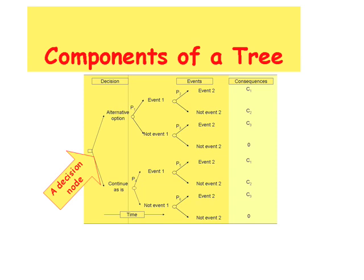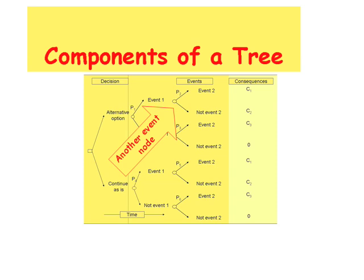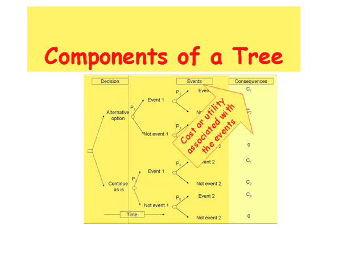This slide shows the components of a decision tree. You see here a decision node — a square node with two arcs going out of it to alternative options. One is 'continue as is' and the other is the alternative option. The event node is shown with a circle and each arc points to either the event occurring or not occurring. Here you see another event following the original event. The last component is displayed on the right side of the tree and shows the consequences, typically either the utilities or costs associated with the pathway.